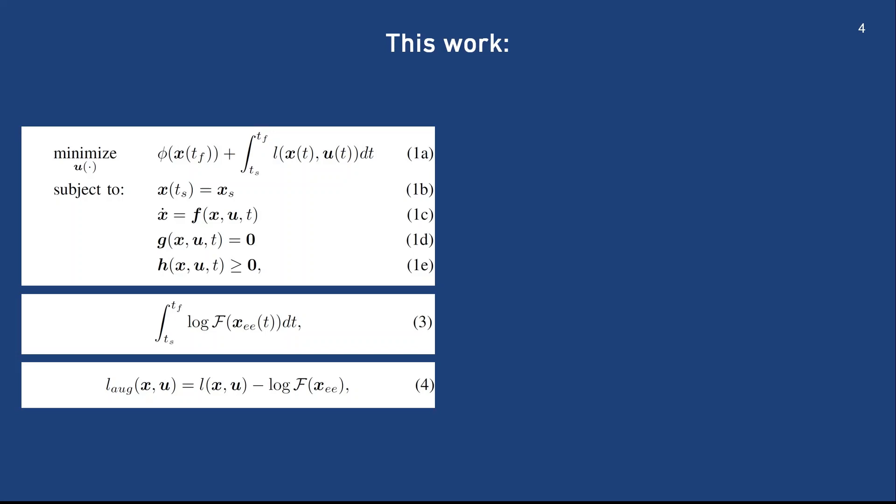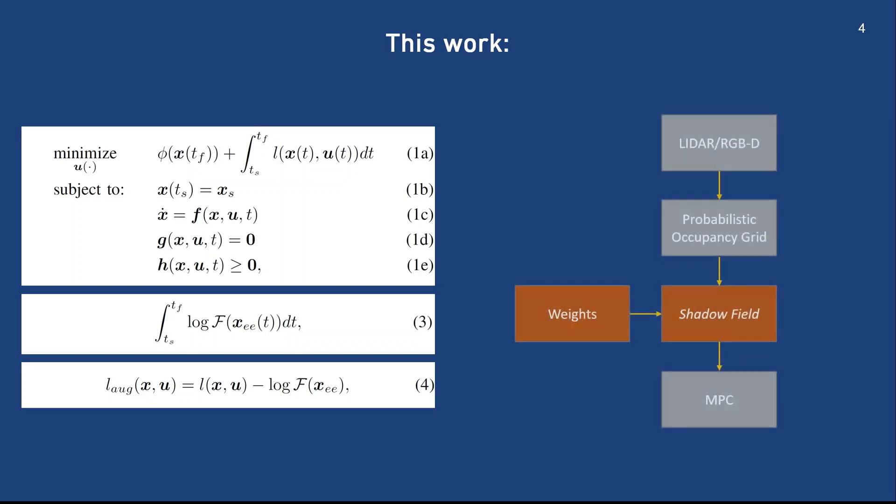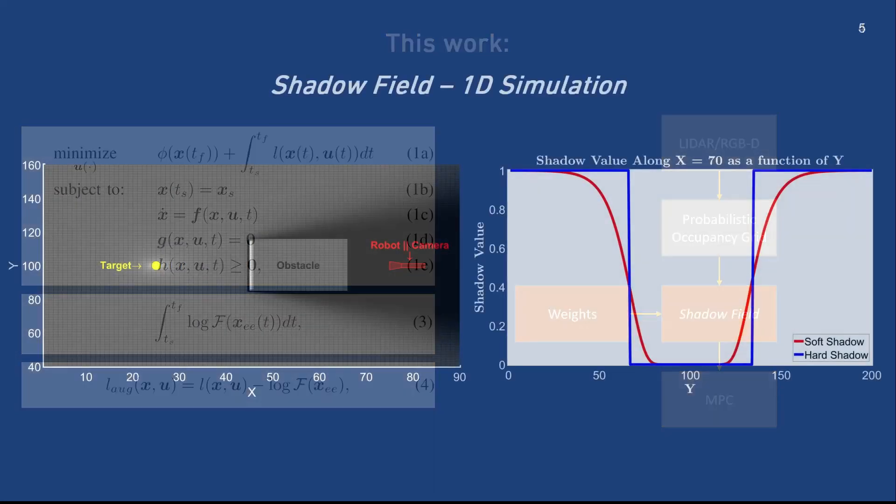We can then solve this optimization problem in an MPC fashion. The likelihood of visibility, however, is rather obscure, so we propose a dynamic programming algorithm called Shadow Field, which uses lidar or RGBD data to compute a field containing information about the likelihood of visibility for the entire space of interest.